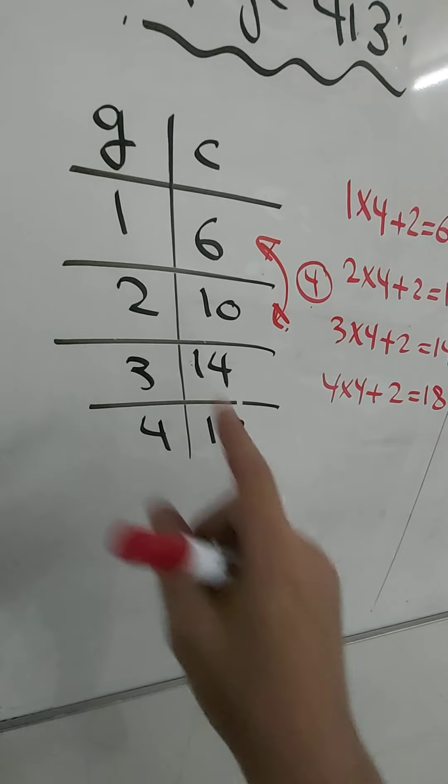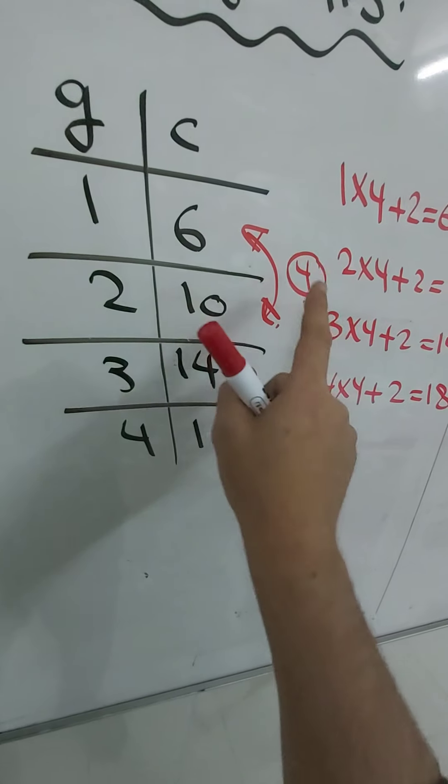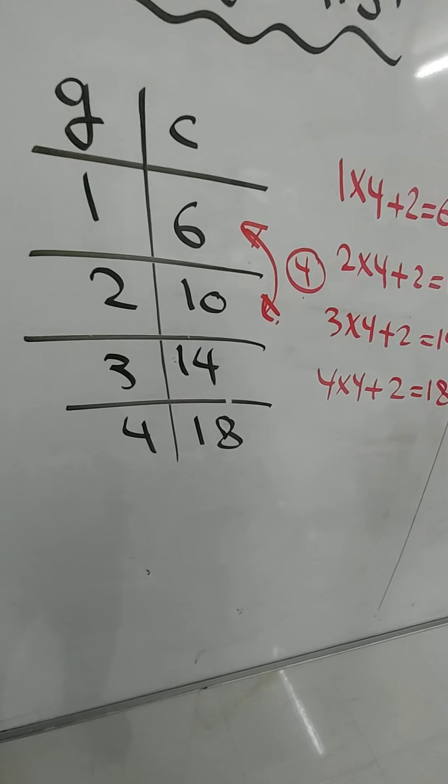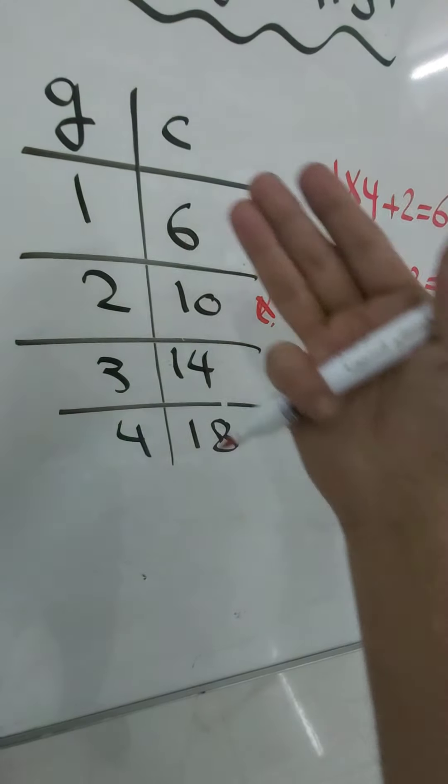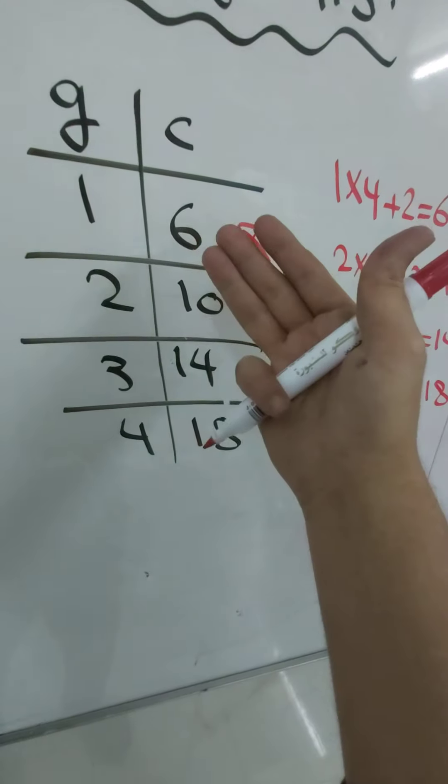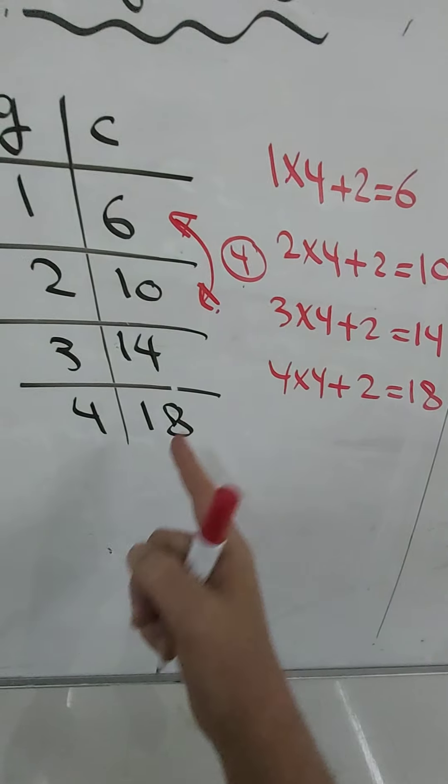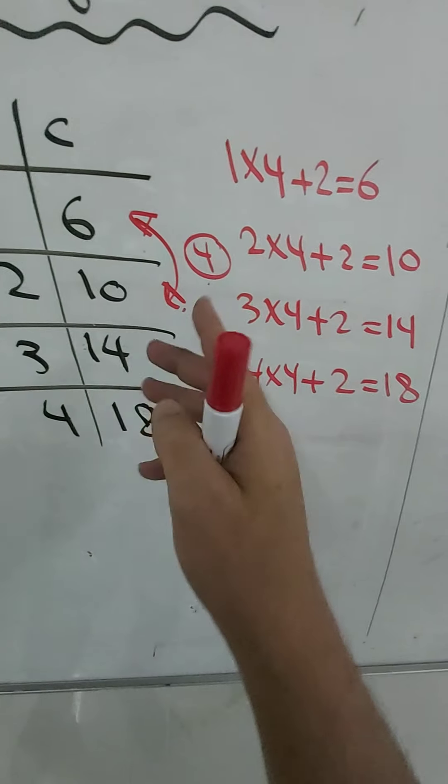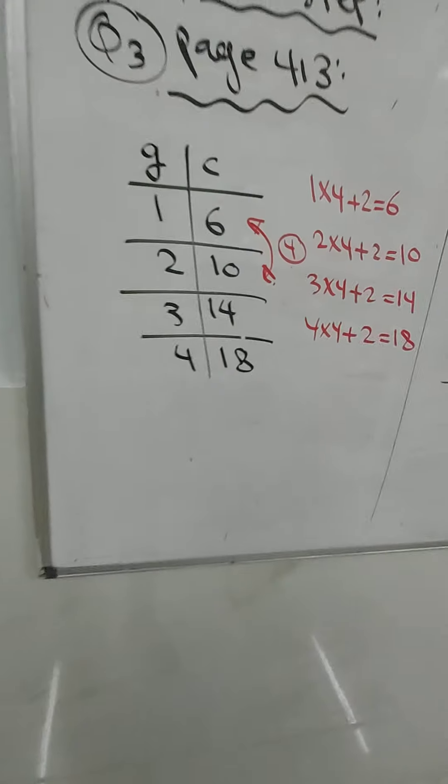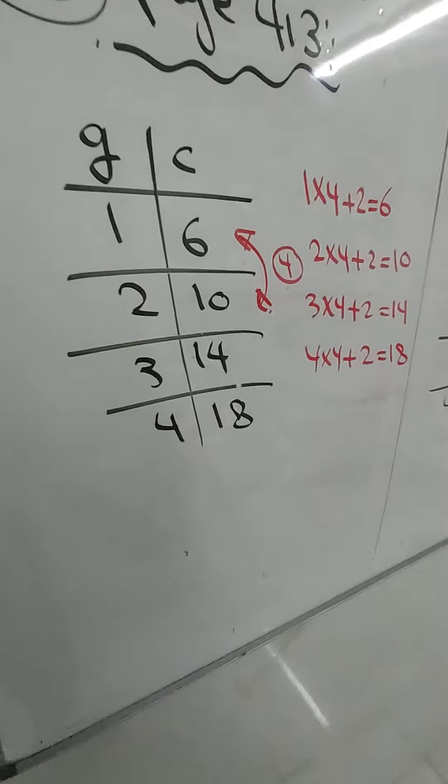So the secret here is to subtract the first two numbers, then multiply one by four. You have four, then you will ask yourself how much it needs to be six. And if you apply it all, you will see that all of these numbers multiplied by four, then add two to them, you will get the answers here.